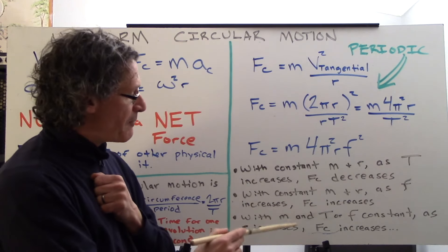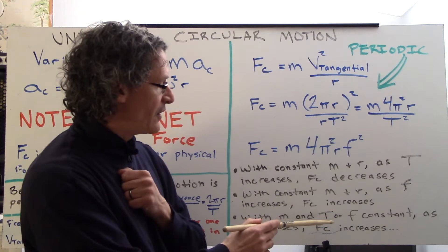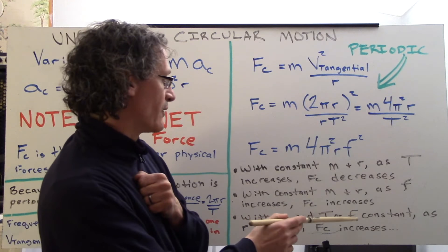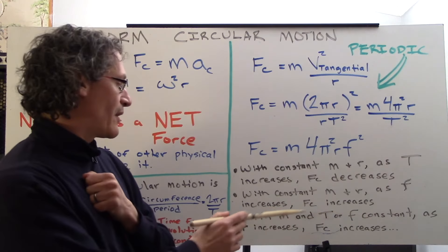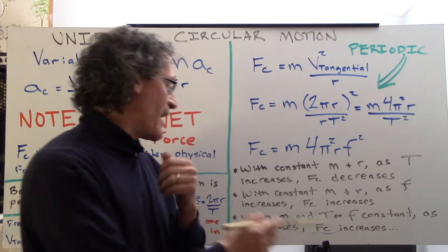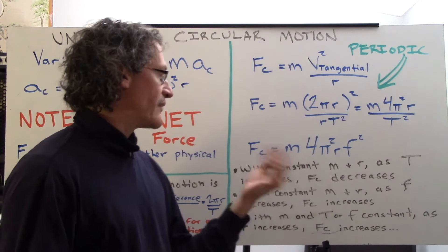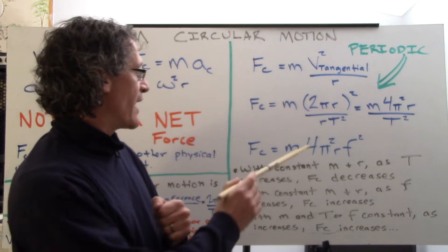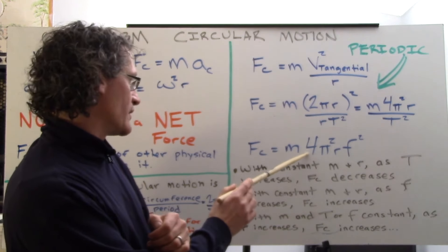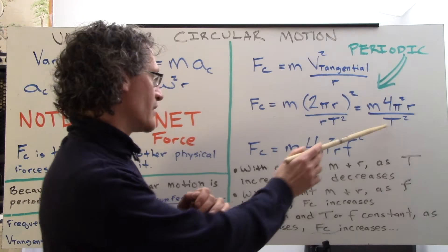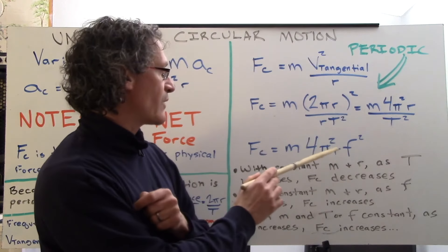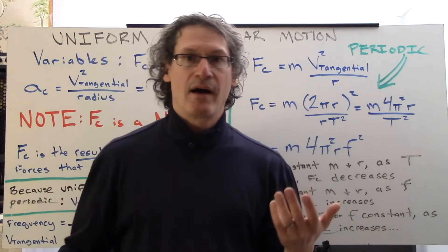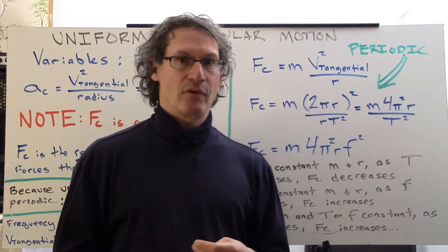And then lastly, with mass and period or frequency constant, period or frequency constant, as r increases, Fc increases as well. So we have this constant or this constant or this constant. And we're looking at the radius. Radius is proportional to the centripetal force.